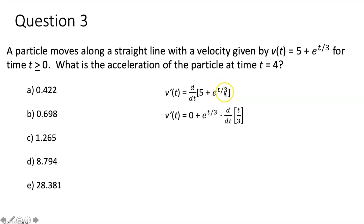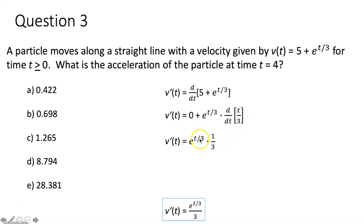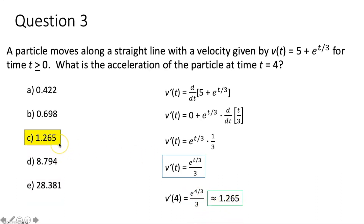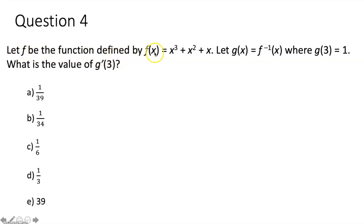t over 3 is the same as one third times t, so by the constant multiple rule we move the one third out front and take the derivative of t, which is just 1. So one third times 1 gives one third, multiplied by e to the t over 3, giving e to the t over 3 over 3. That's our acceleration function. Plugging in t equals 4 and evaluating in our calculator gives approximately 1.265, which is choice C.